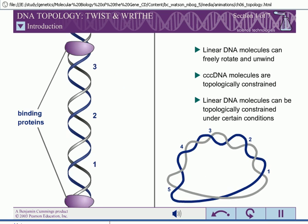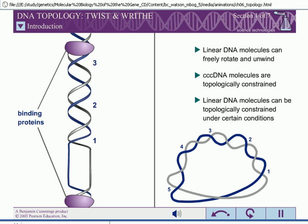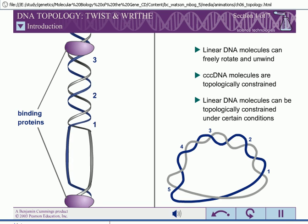Even the linear DNA molecules of eukaryotic chromosomes can be topologically constrained because of their interactions with other cellular components.